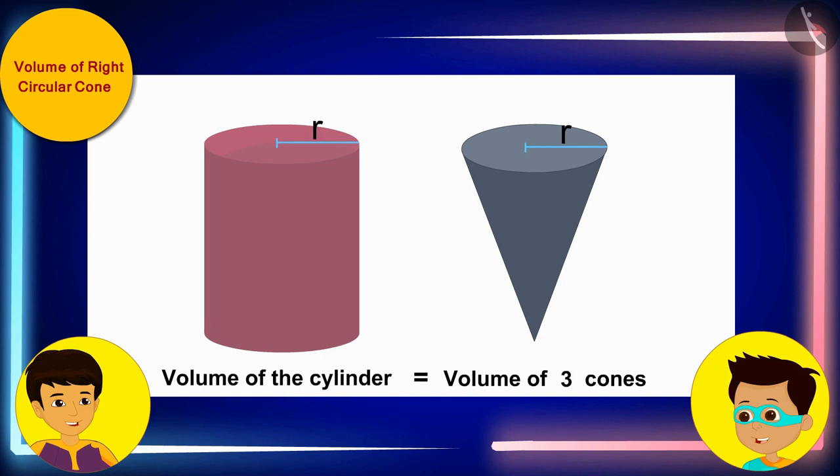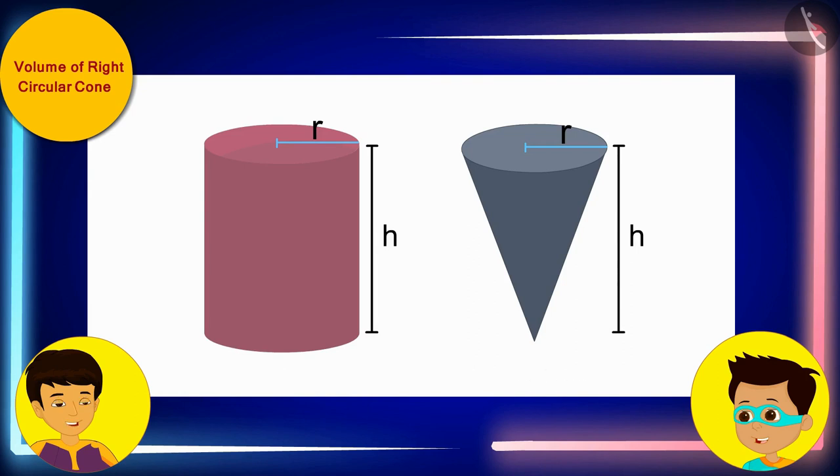This means, if the radius of the base and the height of the cone and cylinder are the same, then the volume of the cone is one-third of the volume of the cylinder.